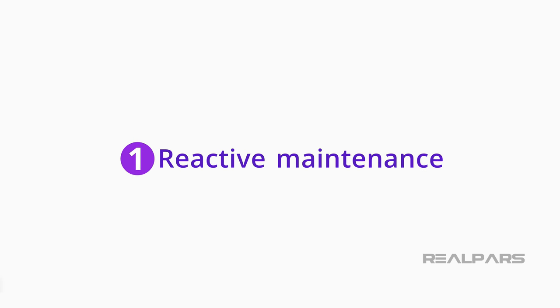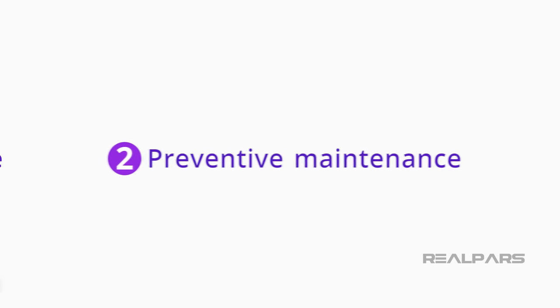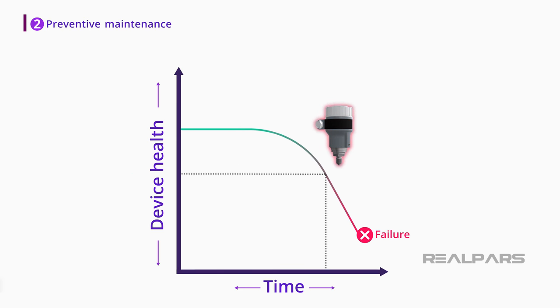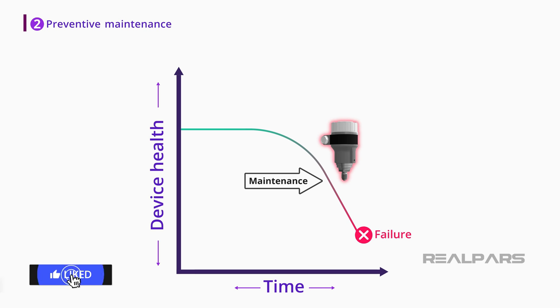So what is the solution? The solution is to use preventive maintenance. With preventive maintenance, you try to perform maintenance for the device long before the device gets to the point of failure. For example, you can check the pressure transmitter regularly and before it gets to the point of failure to make sure that there won't be any sudden interruption to the industrial process.